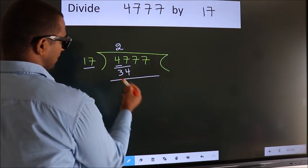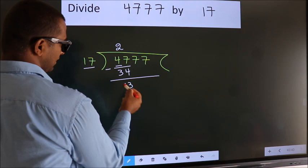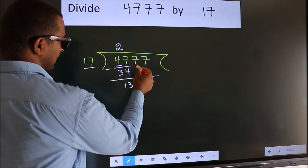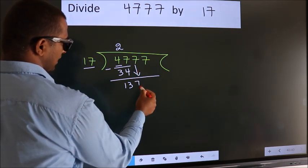Now we should subtract. We get 13. After this, bring down the next number. So 7 down.